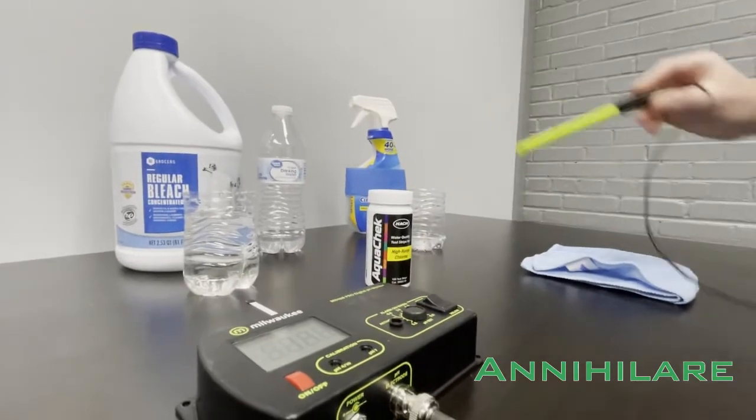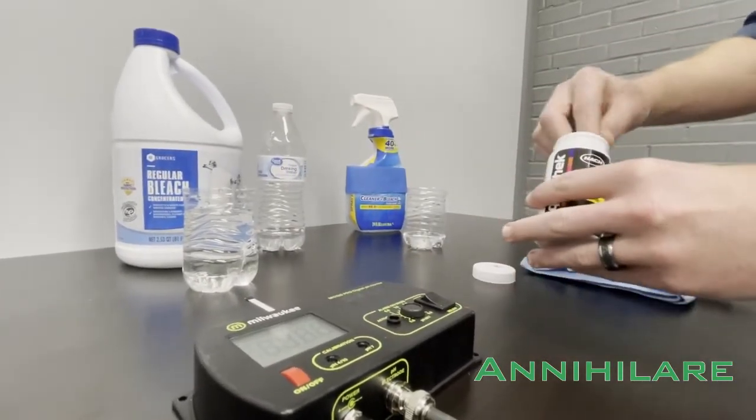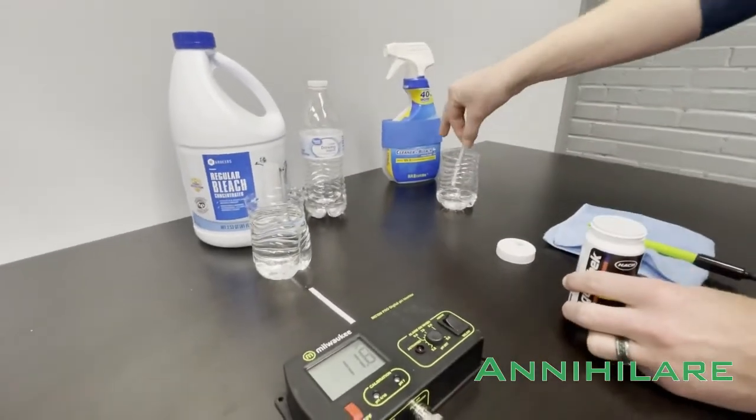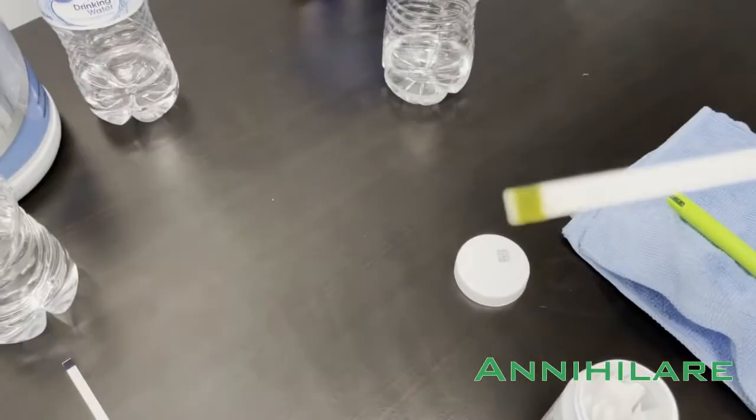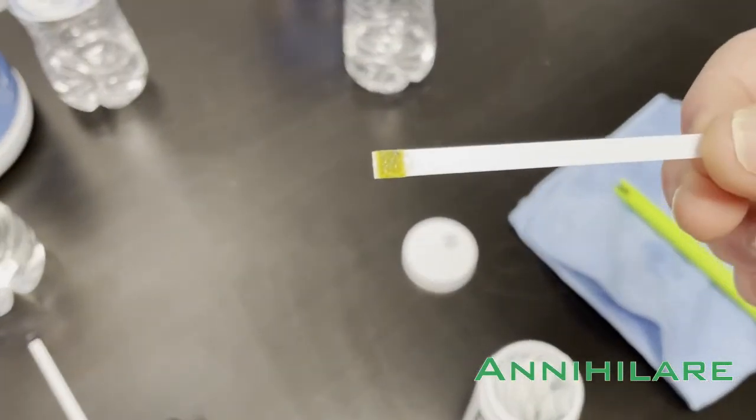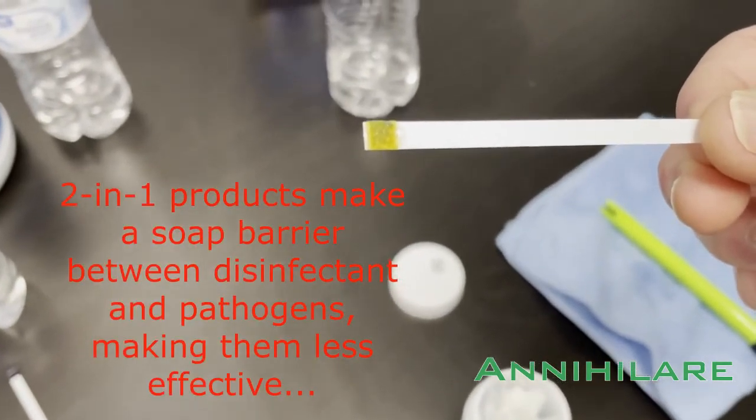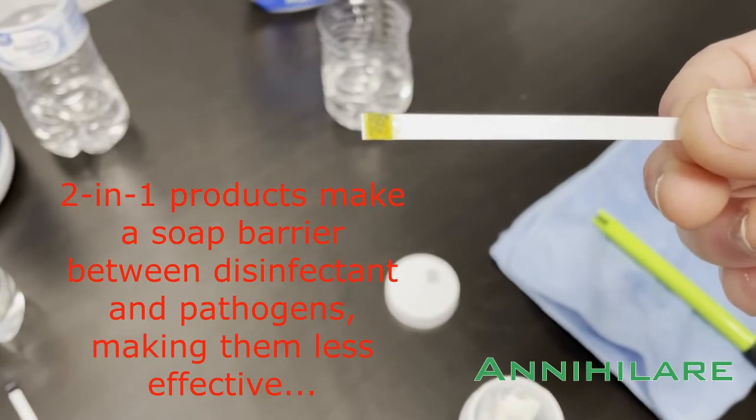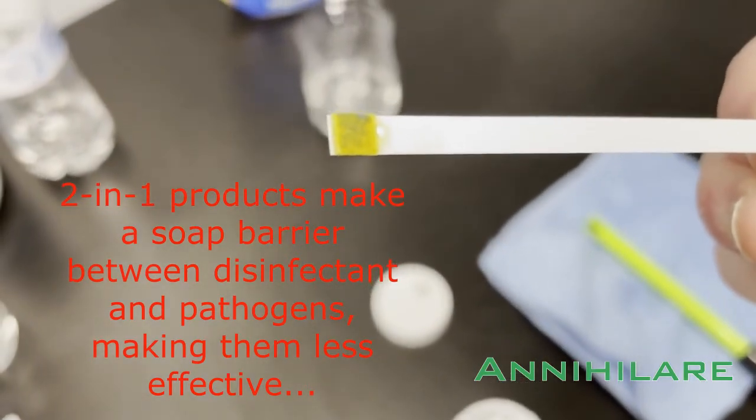But because it has a soap in it and a disinfectant, when I take a chlorine test strip to expose the tip to the disinfectant to show the chlorine, you'll see this sort of yellowy film and that's the soap part of the product. What happens is when you spray that on the surface, it actually lays heavier than the disinfectant. If you look closely underneath, you can see the dark blue there.